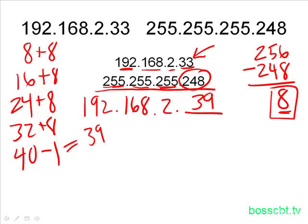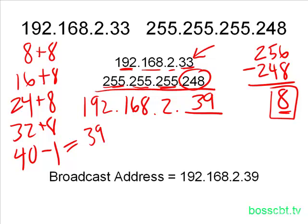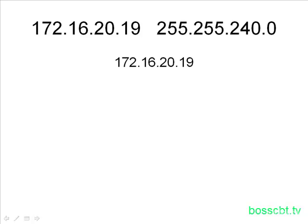So our broadcast address is 192.168.2.39. Let's look at another example to reinforce the formulas. We write down our IP address and just below it the subnet mask. This example could be a little harder than the last because the subnet mask has 255s, zeros, and a funny-looking octet of 240.